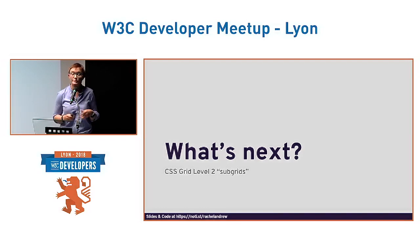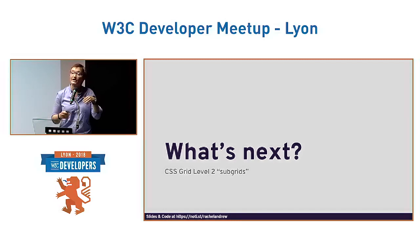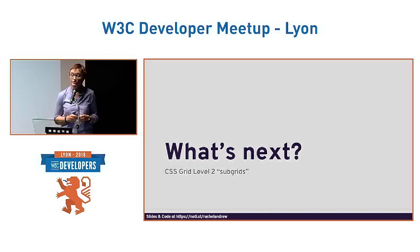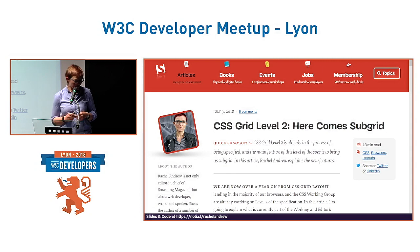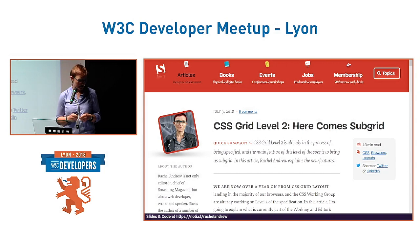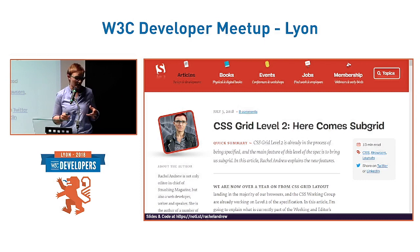With subgrid, you can say: I want not just the direct children but their children to fall onto the overall grid — which is going to be very useful. That's what's in the Level 2 spec. The spec is pretty much finished and we're waiting for browser implementations. I went through the spec and wrote it up in an article — there's a link at the end of this presentation — explaining how the different parts of subgrid are going to work.